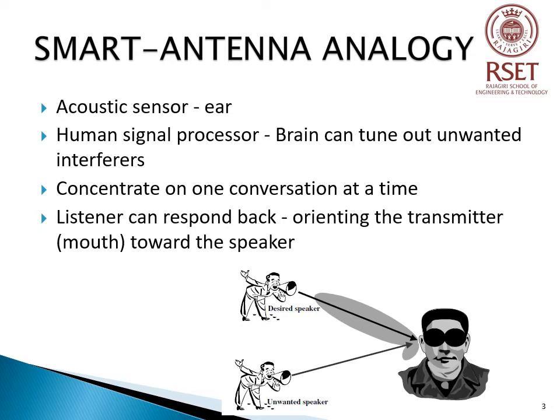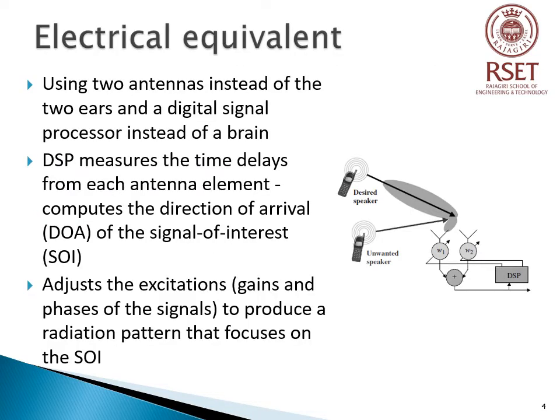The brain adds the strength of the signals from each ear so as to focus on the sound of the computed direction. Also, if additional speakers join in the conversation, the brain can tune out unwanted interferers and concentrate on one conversation at a time. The listener can respond back in the same direction of the desired speaker by orienting the transmitter, which is the mouth, towards the speaker. Smart Antenna systems work the same way using two antennas instead of two ears and a digital signal processor instead of the brain, as shown in the figure.